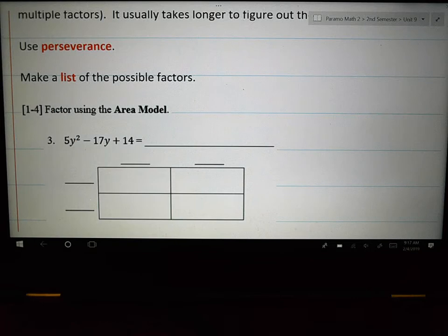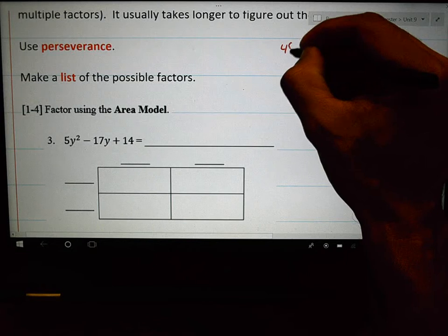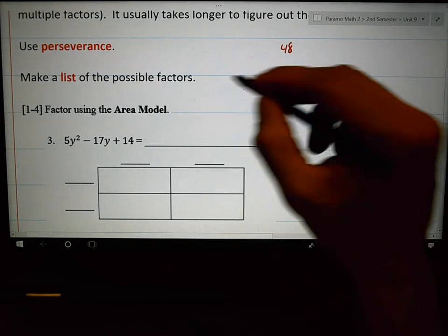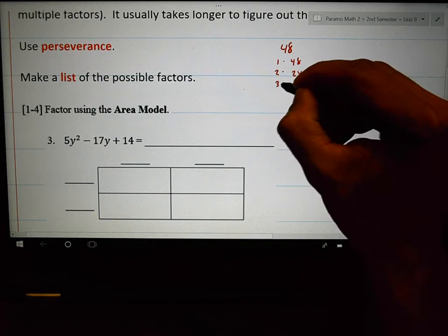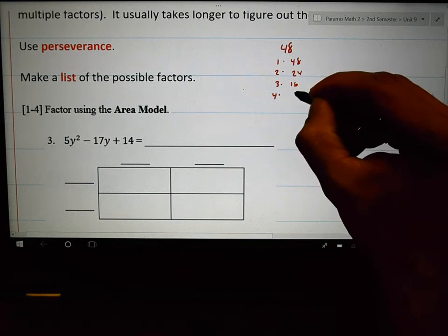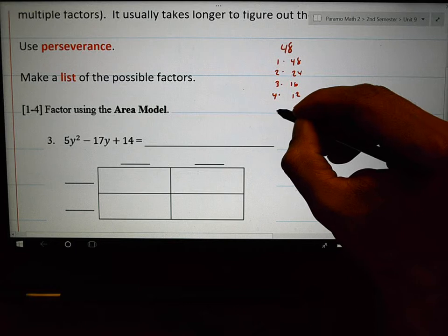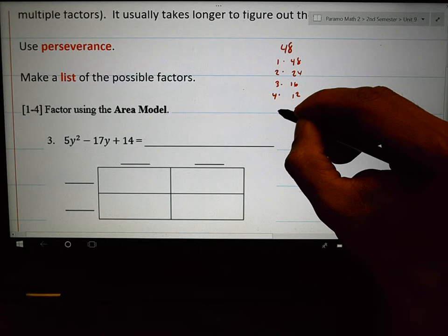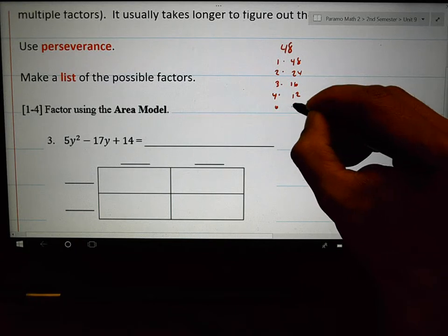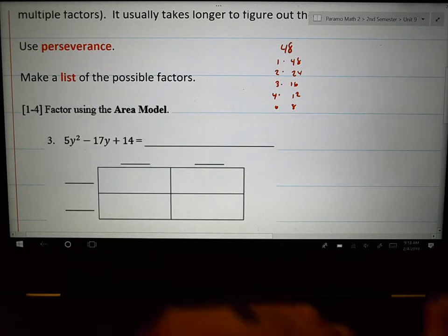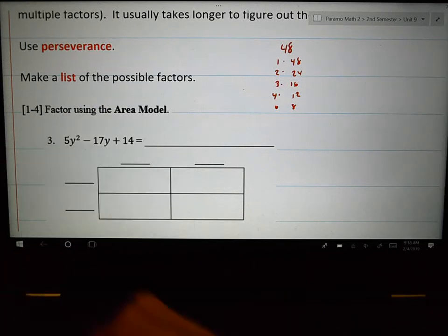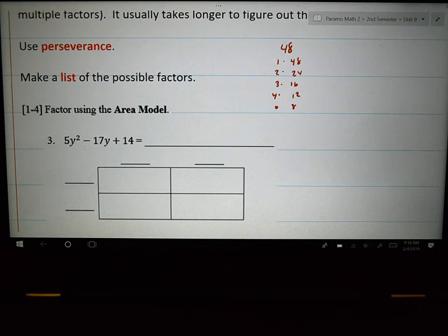The other thing that I'm going to recommend is to make a list of the possible factors. Earlier, I talked about 48. And if you're splitting apart 48, sometimes it's going to be really good for you to say, Okay, this times this, this times that, this times this, this times 12, 5 doesn't work. Does 6 work? 6 times 8 is 48. So sometimes writing a list of all the possible numbers, all the composite factors, might help you as you're trying to find the right combination.